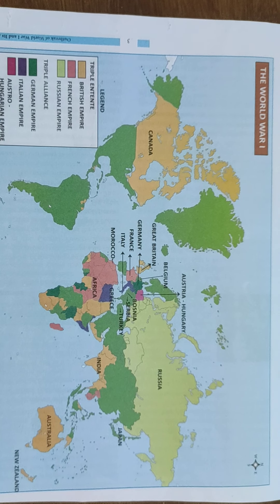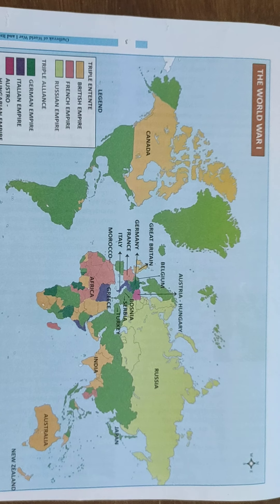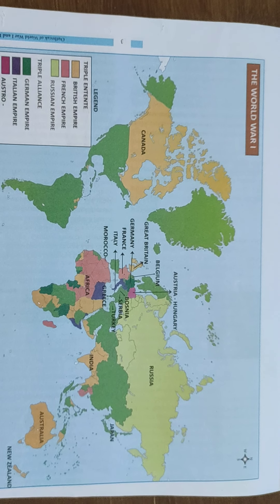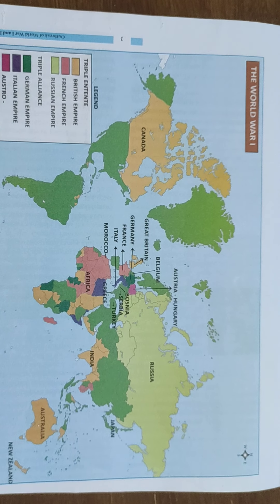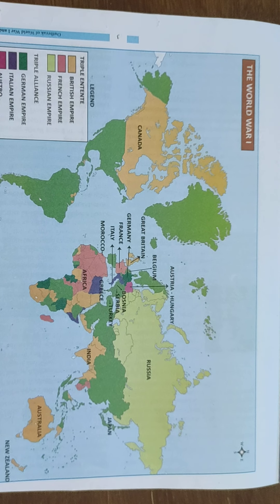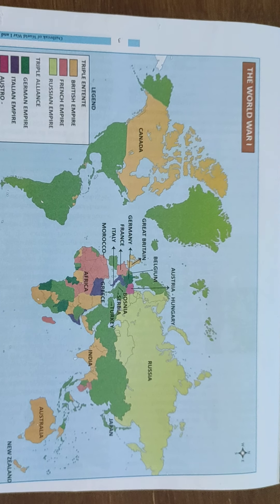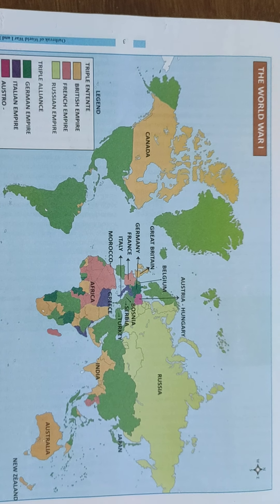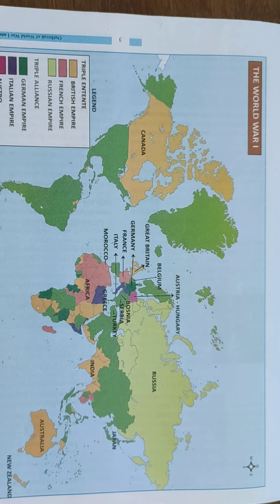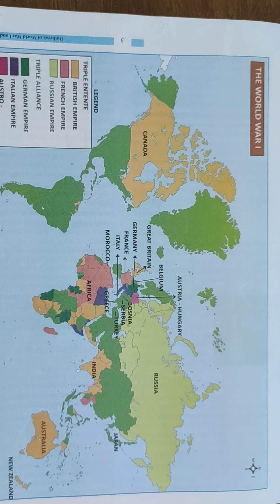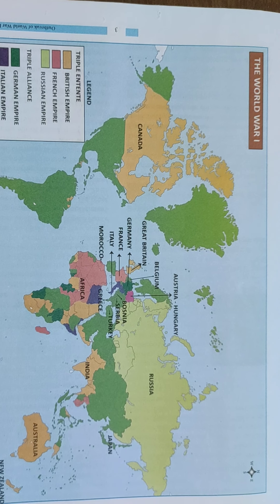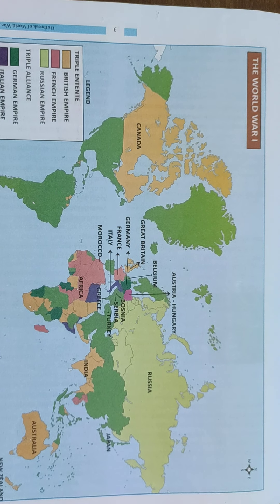Good morning students. For our social science exam we have two maps — one is from history, another one is from geography. For the history map we are going to take the first lesson. In this map you can see the places of the world, particularly in Europe. Here in this map you can see Africa, Europe, and Russia.